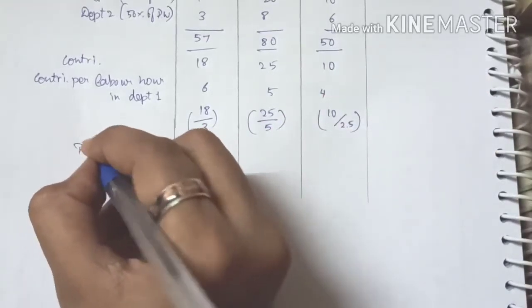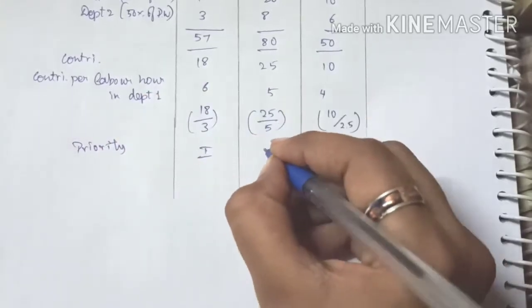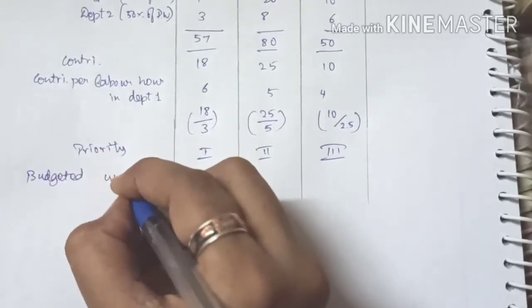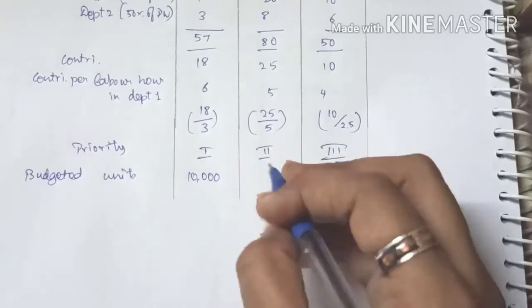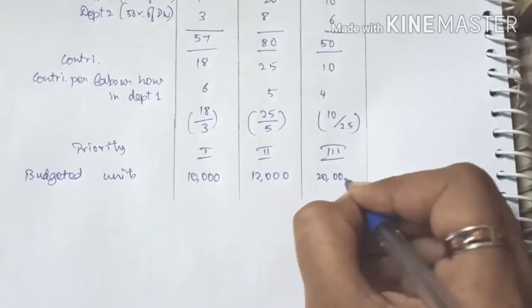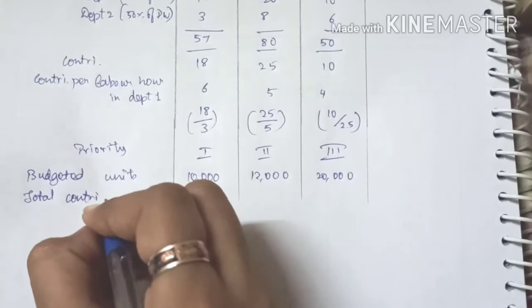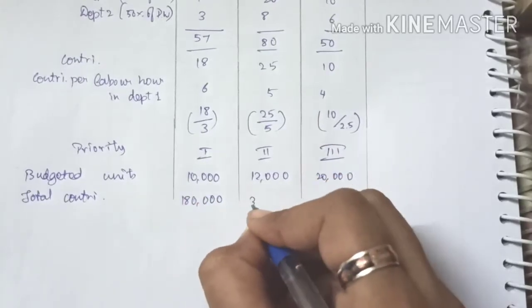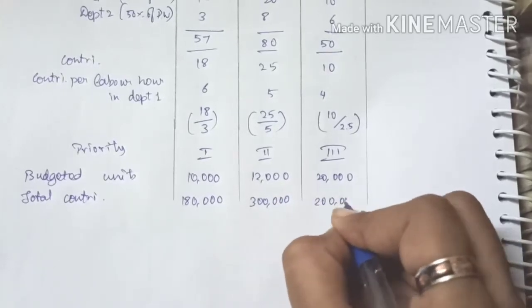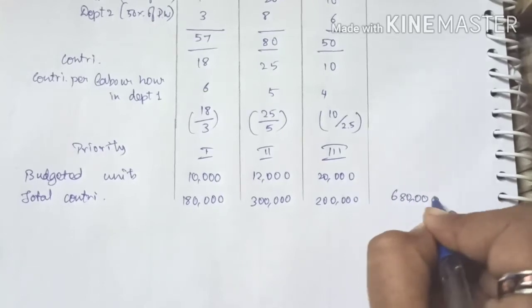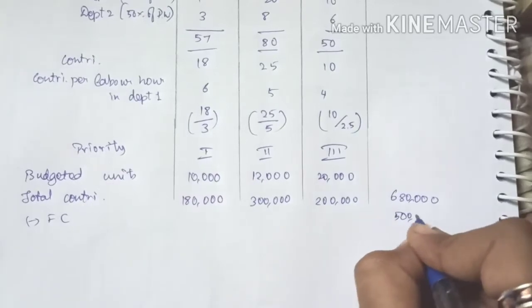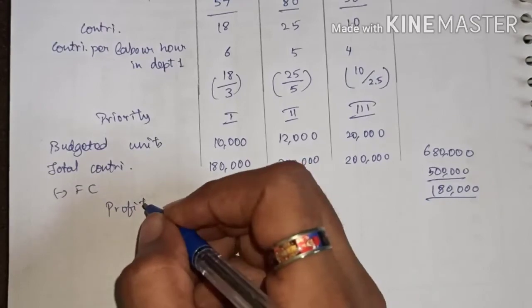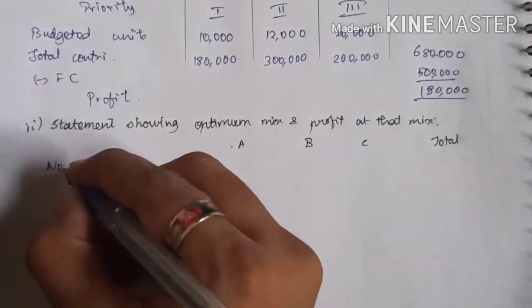Priority order is A first, B second, C third. Budgeted units are 10,000 units for A, 12,000 for B, and 20,000 for C. Total contribution: 10,000 × 18 = 1,80,000; 12,000 × 25 = 3,00,000; 20,000 × 10 = 2,00,000. Total is 6,80,000. Subtracting fixed cost of 5,00,000 gives a budgeted profit of 1,80,000.